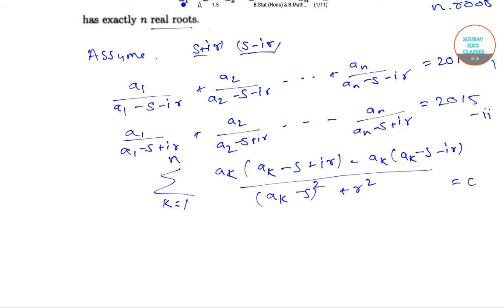This implies summation k runs from 1 to n, 2ir ak divided by ak minus s square plus r square which equals 0.